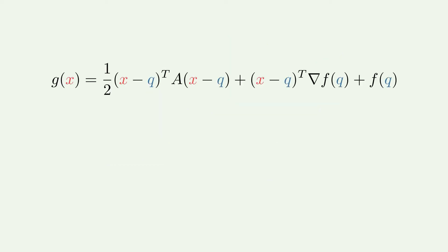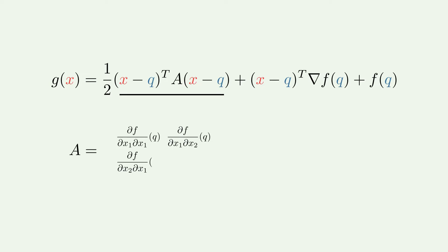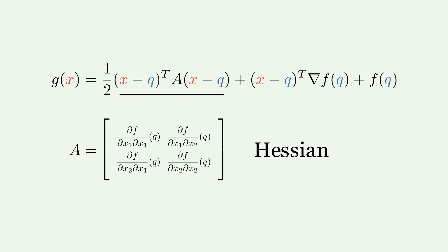Before continuing, let us take a brief look at how such a quadratic approximation looks. f is our original function and q the point where the function is approximated. This approximation is also known as the Taylor expansion to the second order and is a sum of three components. The constant component ensures that the approximation has the same value as the original function at point q. The linear component ensures the approximation has the same gradient as the original function at point q. Especially important is the quadratic component, which uses the Hessian matrix A — a symmetric matrix consisting of all second derivatives — ensuring the approximation has the same curvature as the original function f.